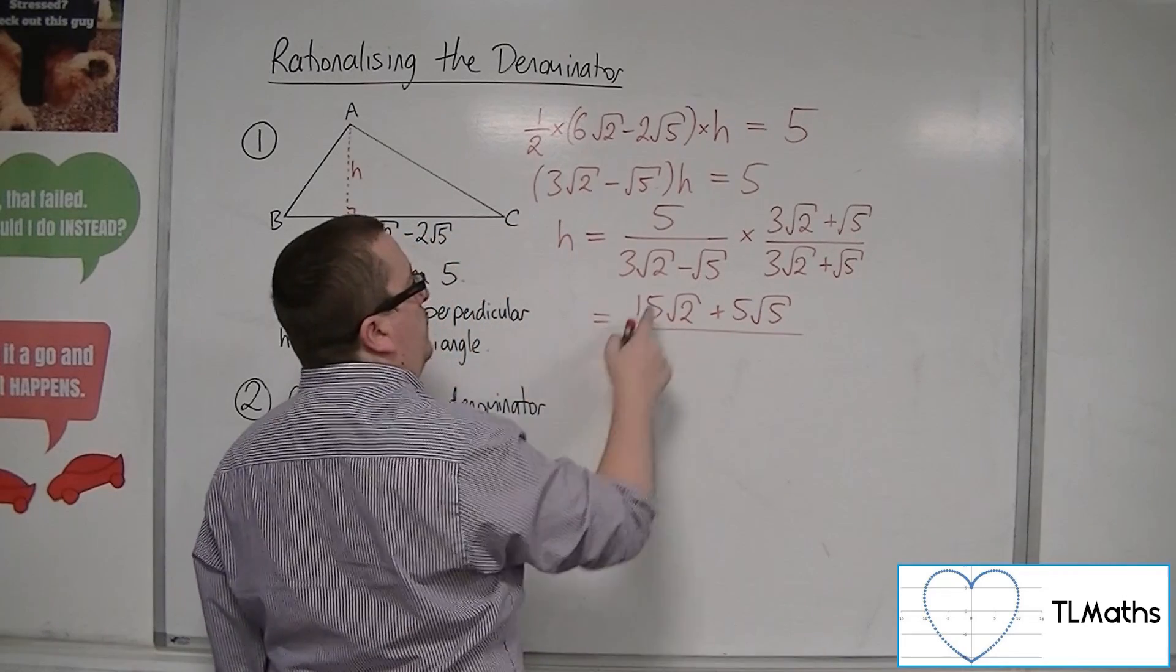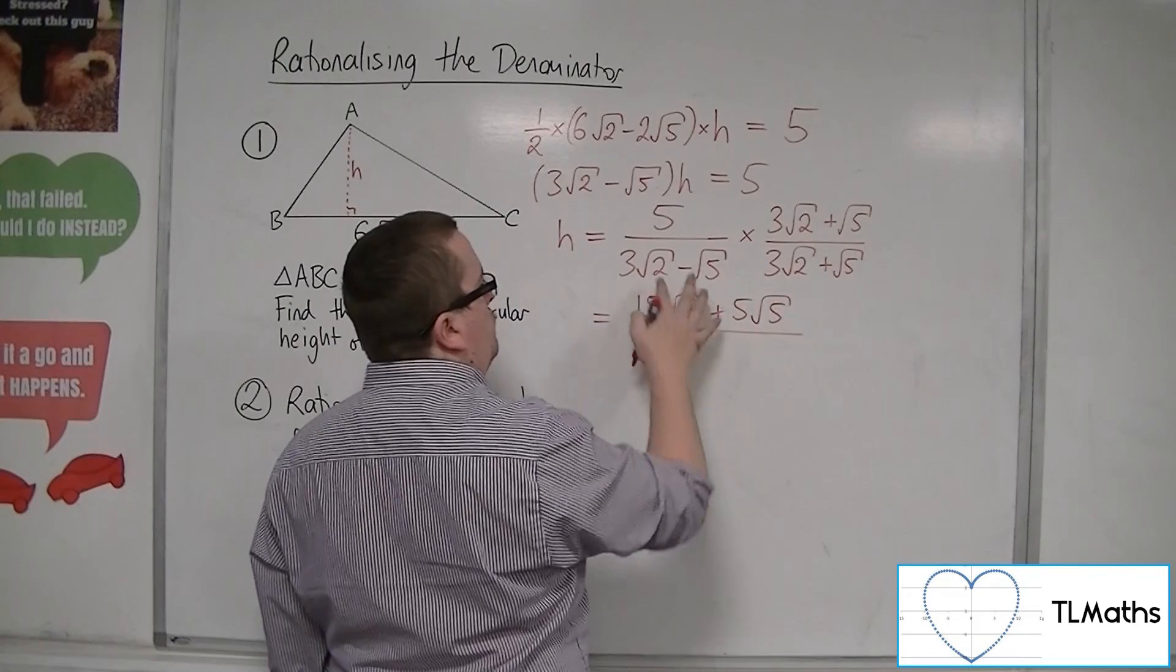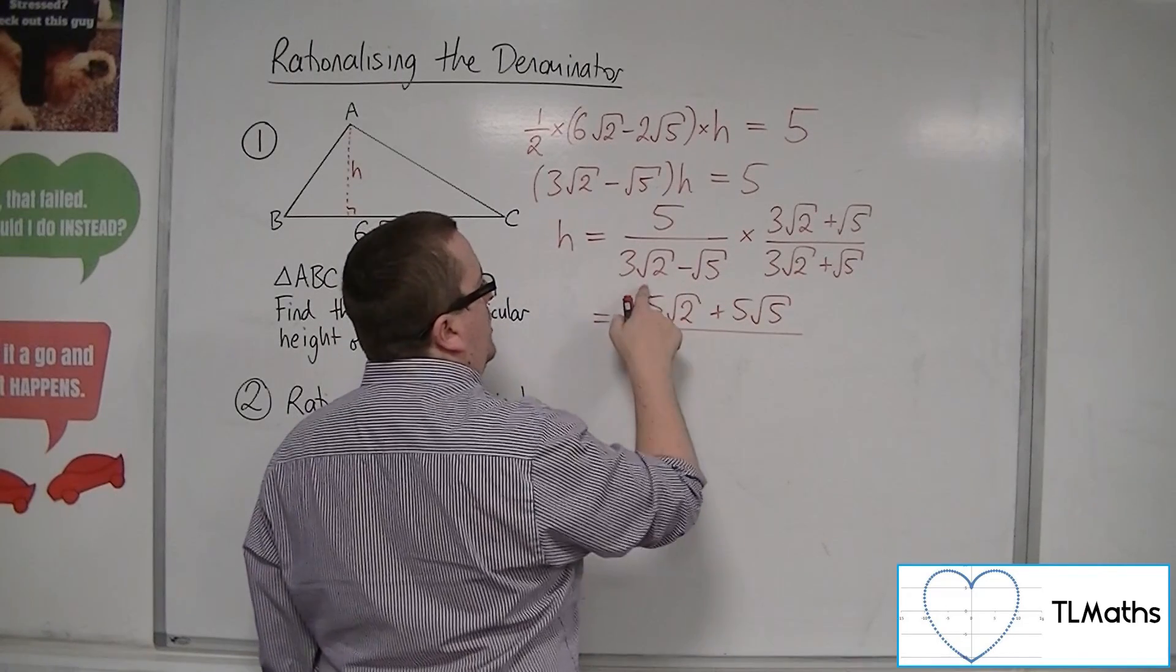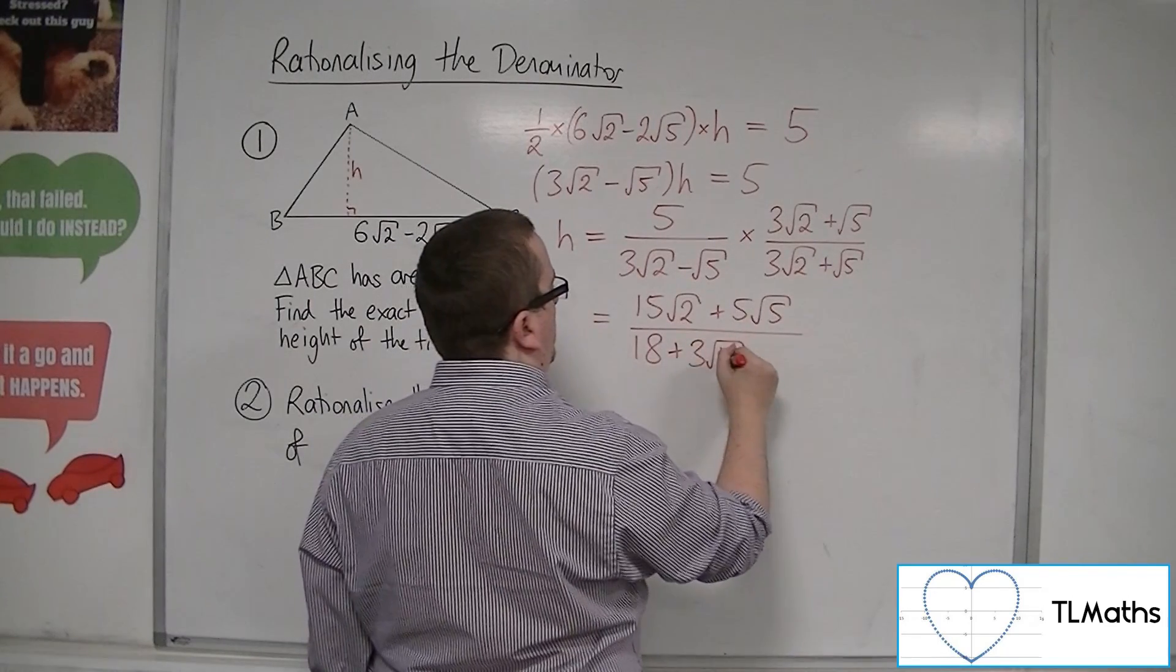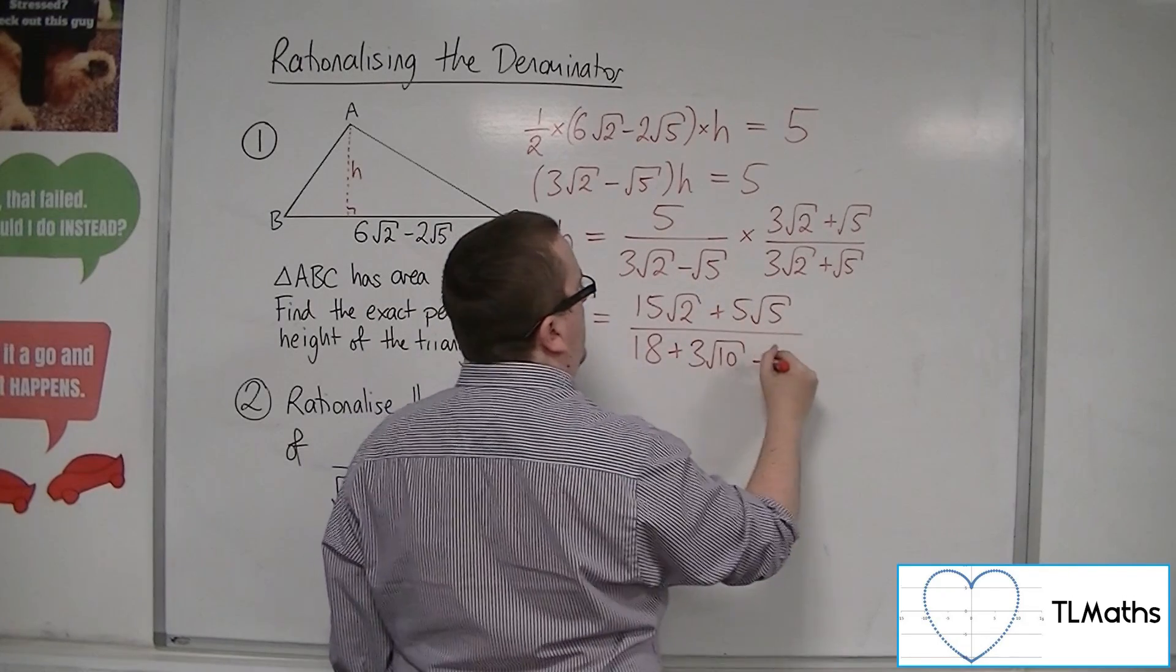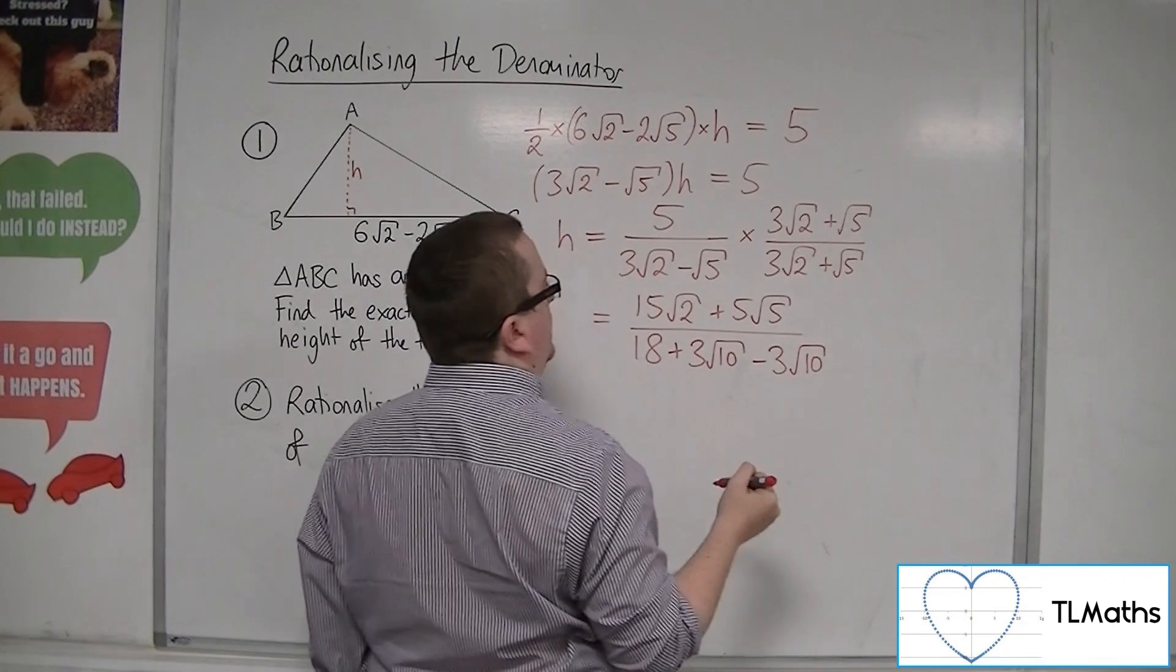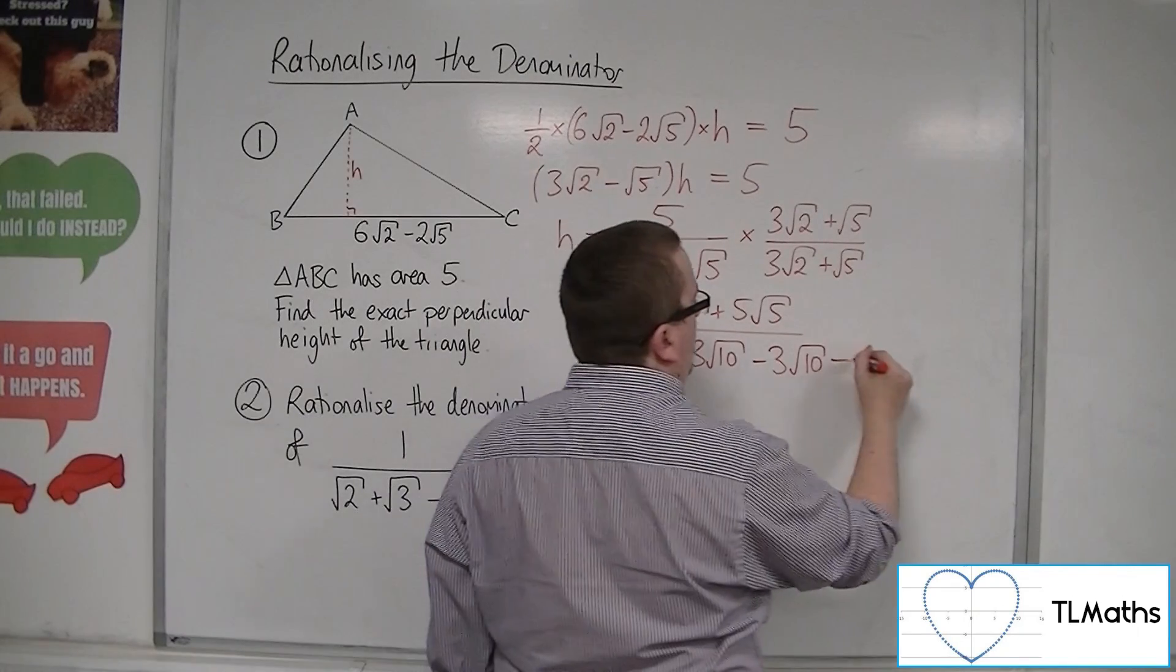And in the denominator, we've got 3 root 2 times 3 root 2, so 3 times 3 is 9. Root 2 times root 2 is 2, so 9 times 2 is 18. 3 root 2 times root 5 is 3 root 10. And minus root 5 times 3 root 2 is minus 3 root 10. And we've got minus root 5 times root 5, which will get me minus 5.